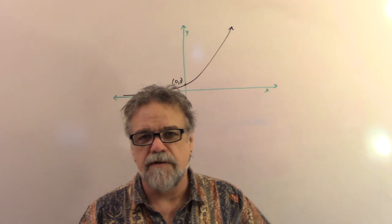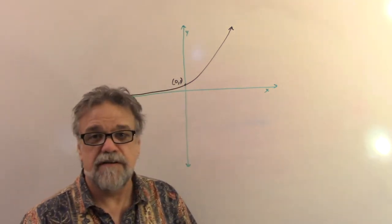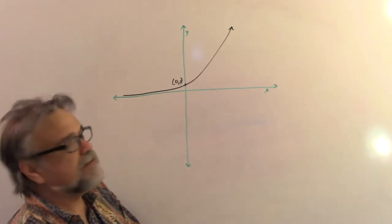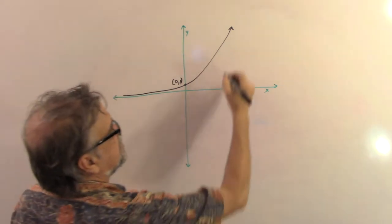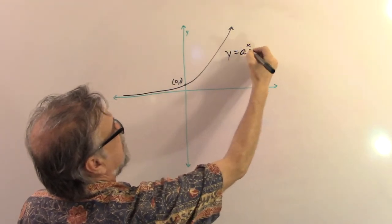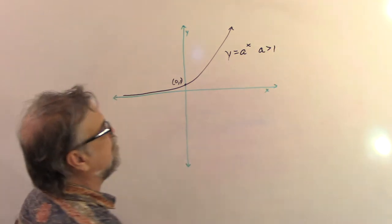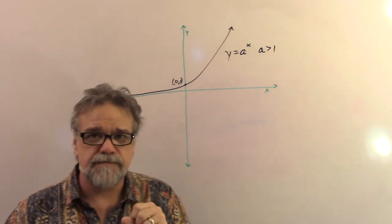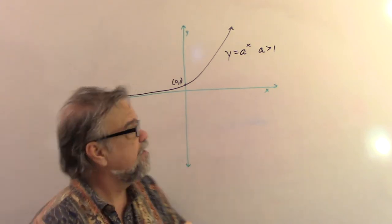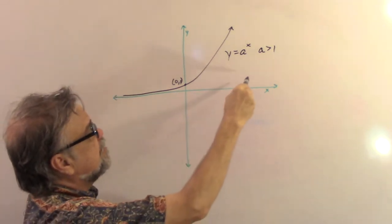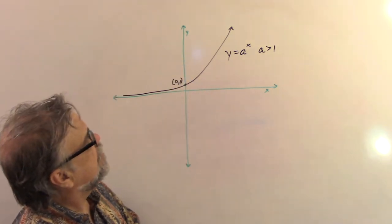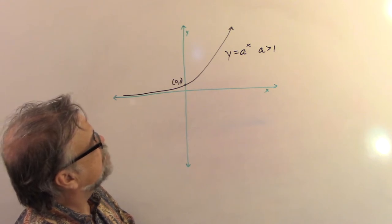Behind me you'll see something that is not a logarithmic function. This looks like it's an exponential function, doesn't it? In particular, it looks like y equals a to the x power, where a is some number that's greater than 1. If a is between 0 and 1, it would look just like this, only swooping up to the left instead of to the right. So that's my graph of y equals a to the x.